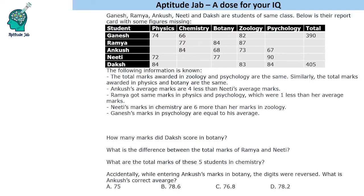Let's see the approach to tackle such questions. If you go through the statements, it talks about total marks awarded in a particular subject, which gives a hint in a vertical manner — physics, zoology, and psychology. Total marks in physics and botany also gives a vertical hint, but this alone does not help us fill the table completely because certain values are still missing.